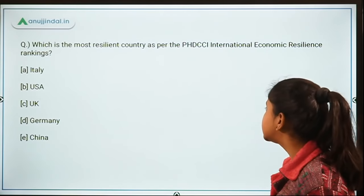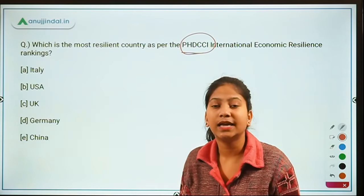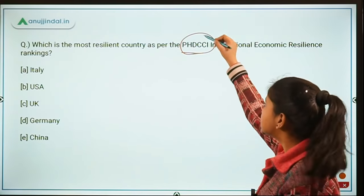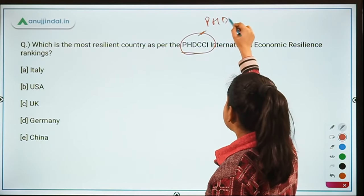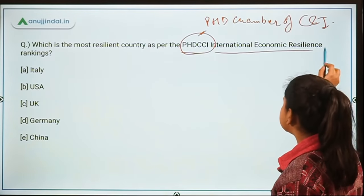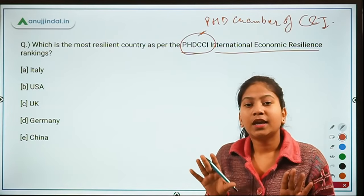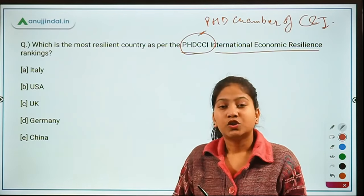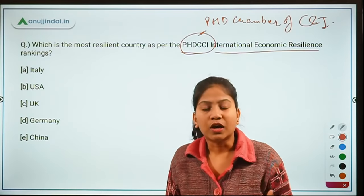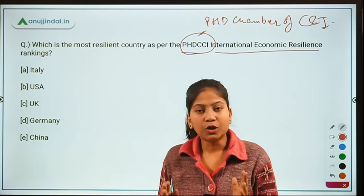PHD CCI refers to the PHD Chamber of Commerce and Industry, which is an indigenous Indian organization. It has recently released the International Economic Resilience Ranking, in which a total of 10 top leading economies were assessed. The ranking shows how resilient each country is to the pandemic in the international market — essentially assessing the economic resilience of a country in the wake of the COVID-19 pandemic in 2021.